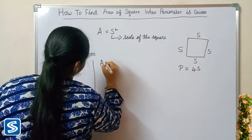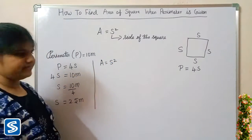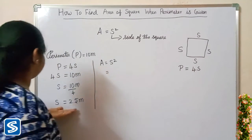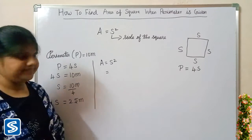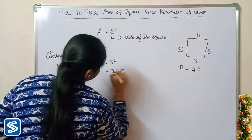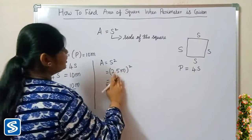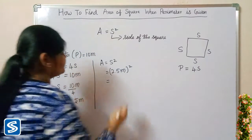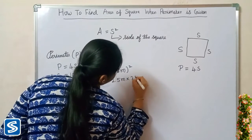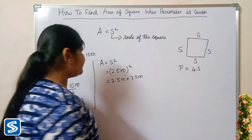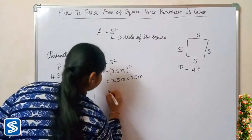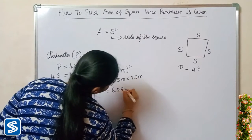So area A is equal to S squared. We already know that here the value of S is 2.5 meters, so we have 2.5 meters whole square, which can be written as 2.5 meters multiplied by 2.5 meters. When we multiply 2.5 meters by 2.5 meters, our answer will be 6.25 meters square.